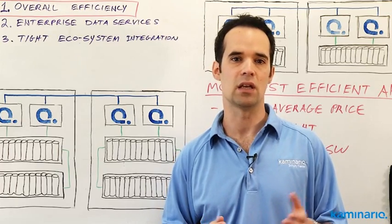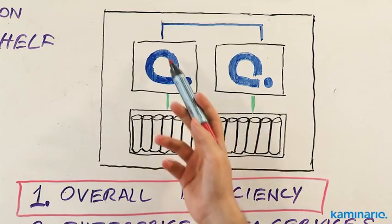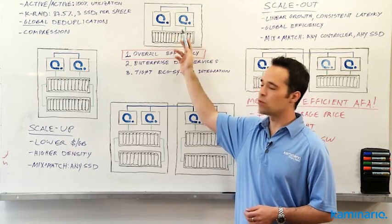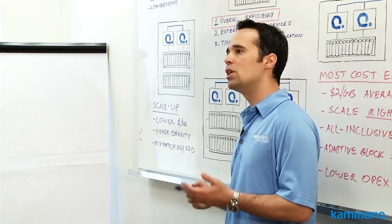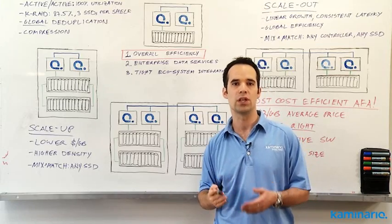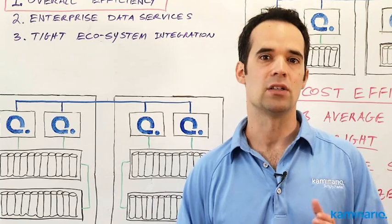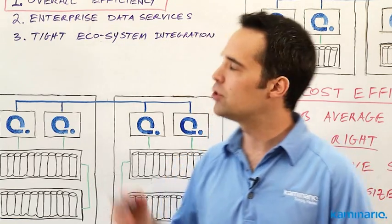So here's a question for you. What does real active-active mean in the context of storage controllers? It means that all the LUNs in the array are accessible from both controllers, and both controllers can access simultaneously the underlying SSD media. Or in other words, both controllers are fully utilized. If that is not the case, it is not active-active, and don't let anyone tell you otherwise.